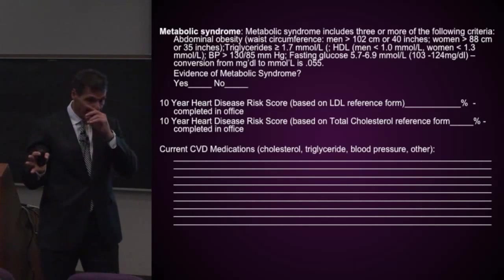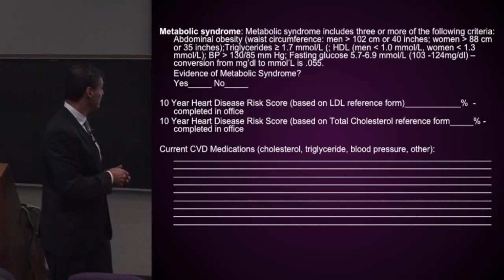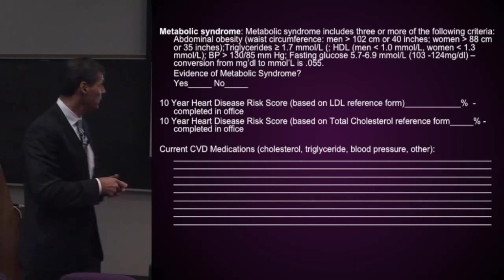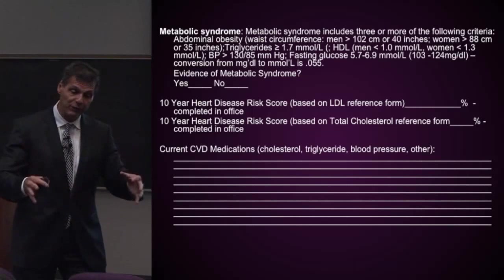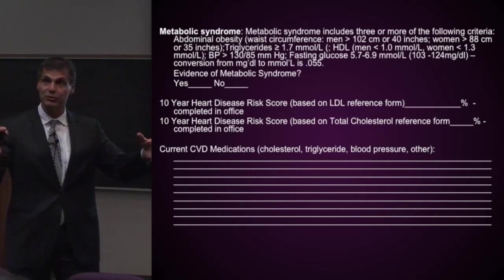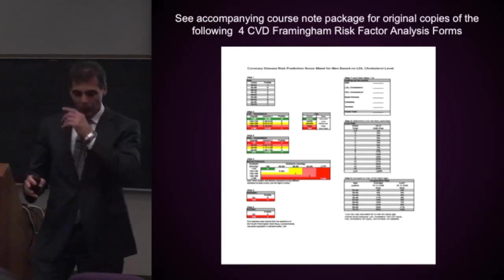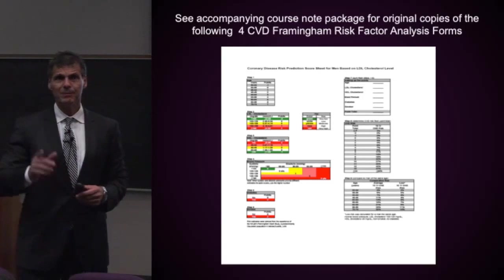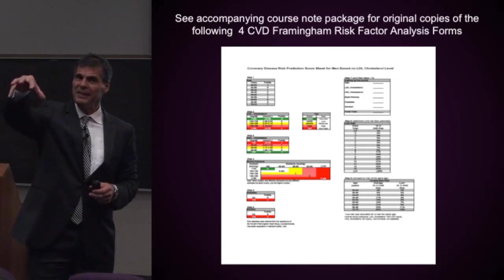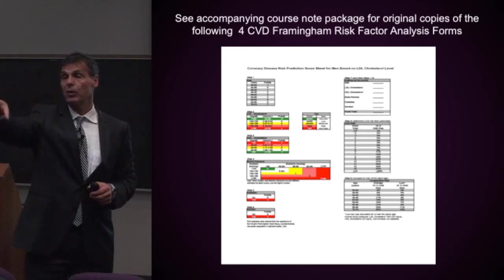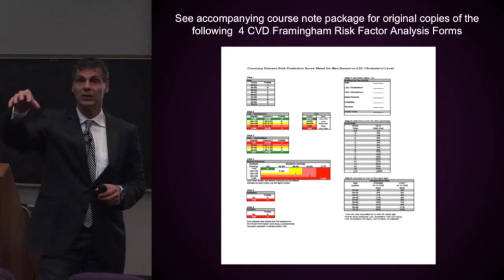I also want to know: is the person on any current cardiovascular disease drugs? Are they on statin drugs, fenofibrate, antihypertensive drugs, or anticoagulant drugs? I want to put that on my form as well. I've included these original forms in your note package so you can use them with your own patients over the years.